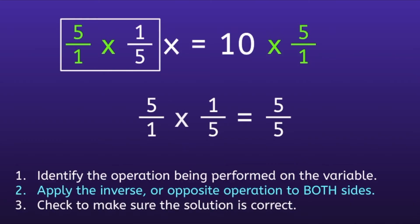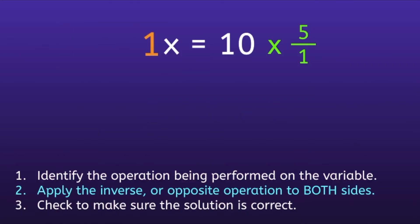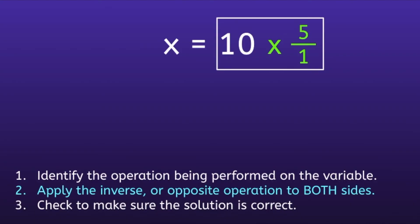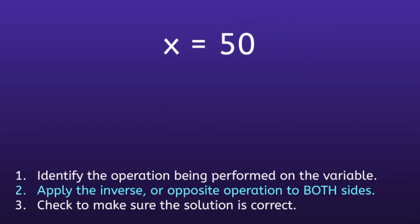So now I have the fraction 5 over 5, and 5 over 5 is equal to 1. This will always work any time you multiply reciprocals — you will always get 1. So I'm left with 1x on the left side, and 1x is equal to just x, so we've gotten x by itself. On the right side, 10 times 5 over 1 equals 10 times 5, which is 50. So x is equal to 50.